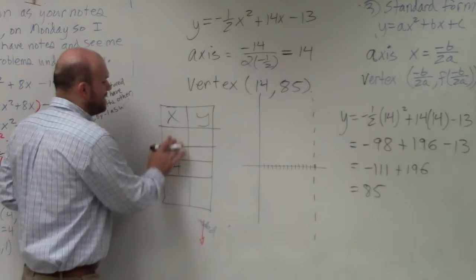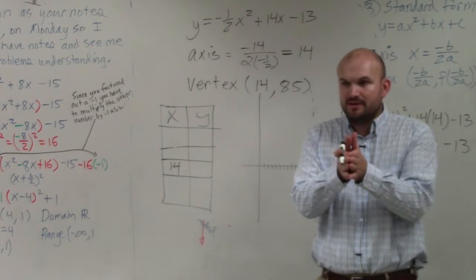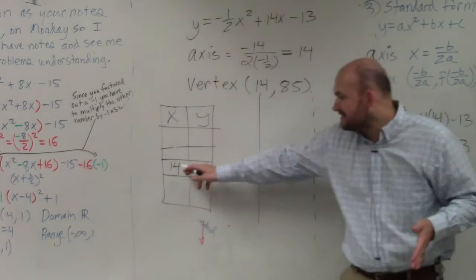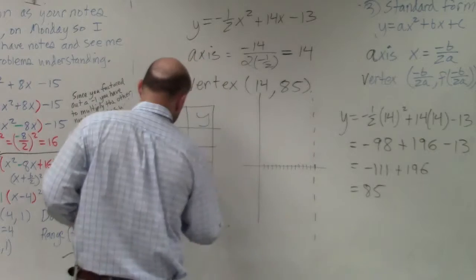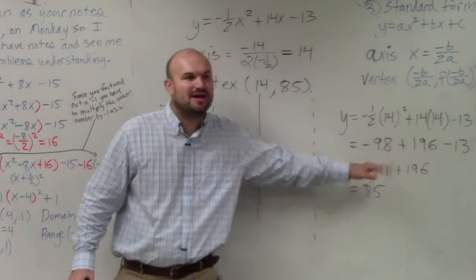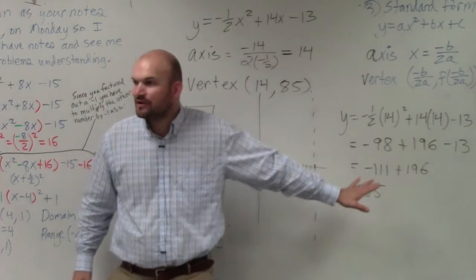Then, if I was going to ask you to graph this, do you guys remember what we talked about when you're looking into graphing? All you simply need to do, if I was going to create a table, remember, all we need to do is, if this is the axis of symmetry, all we simply need to do is pick two points to the left or two points to the right, find what those y-coordinates are, and then reflect them over, right?